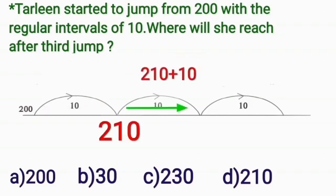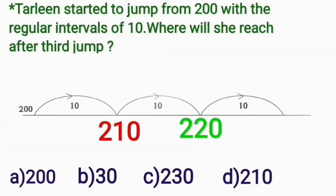After second one, she will reach at 220. Then, finally, after third jump, she will be at 230. So, children, the correct answer is option C. That is 230. This is the correct answer.